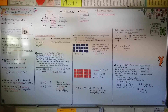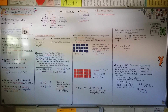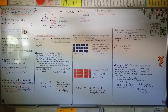We can use multiplication to help us divide because multiplication and division are opposite operations — they're inverse operations. We can use a bar model or an array to help us. And remember, both sides of an equal sign should represent the same amount. I hope you're doing very well, and I'll see you for the next lesson. Bye!